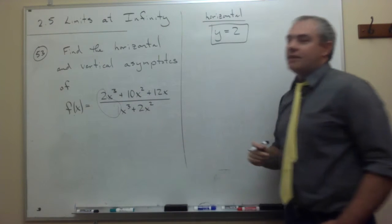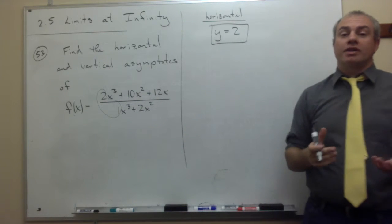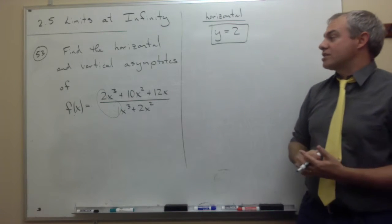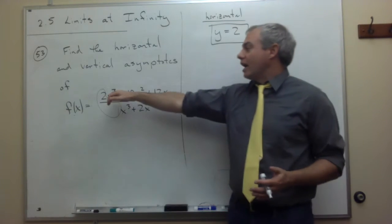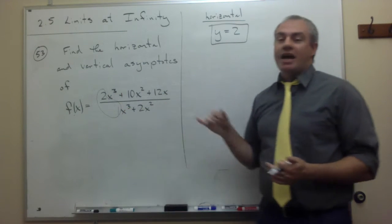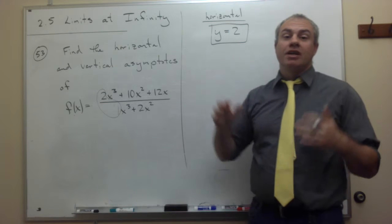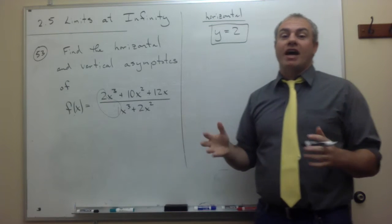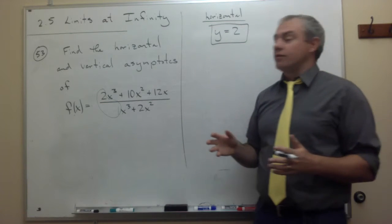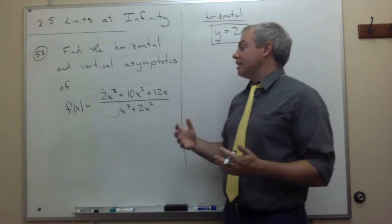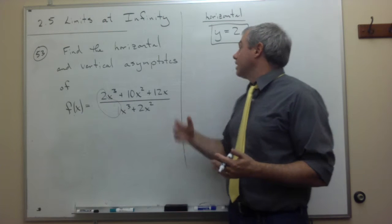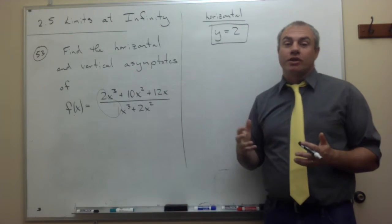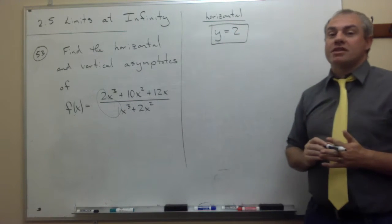I'm using the shortcut here. I could go through the whole process of dividing the top and the bottom by x cubed, simplifying down, taking the limit as x goes to infinity, and at the end of the day I would get 2. So I'm not going to go through that process again.